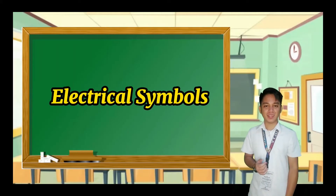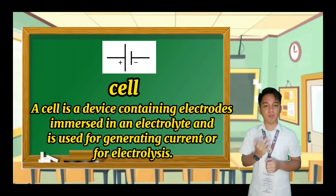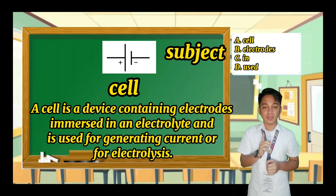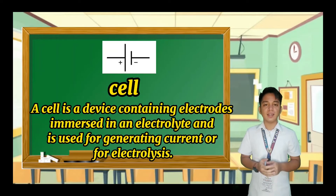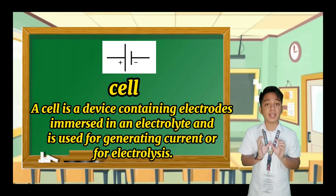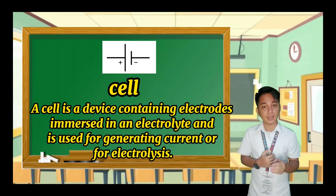Let's learn about electrical symbols. There are different symbols used in the field of electricity, but today I will explain the commonly used ones. The first example is cell. When we say cell, it is a device containing electrodes immersed in an electrolyte and is used for generating current or for electrolysis. It is capable of changing some form of energy such as chemical or radiant energy into electricity. An example of a cell that we usually use is a battery, which is composed of many cells depending on its voltage.